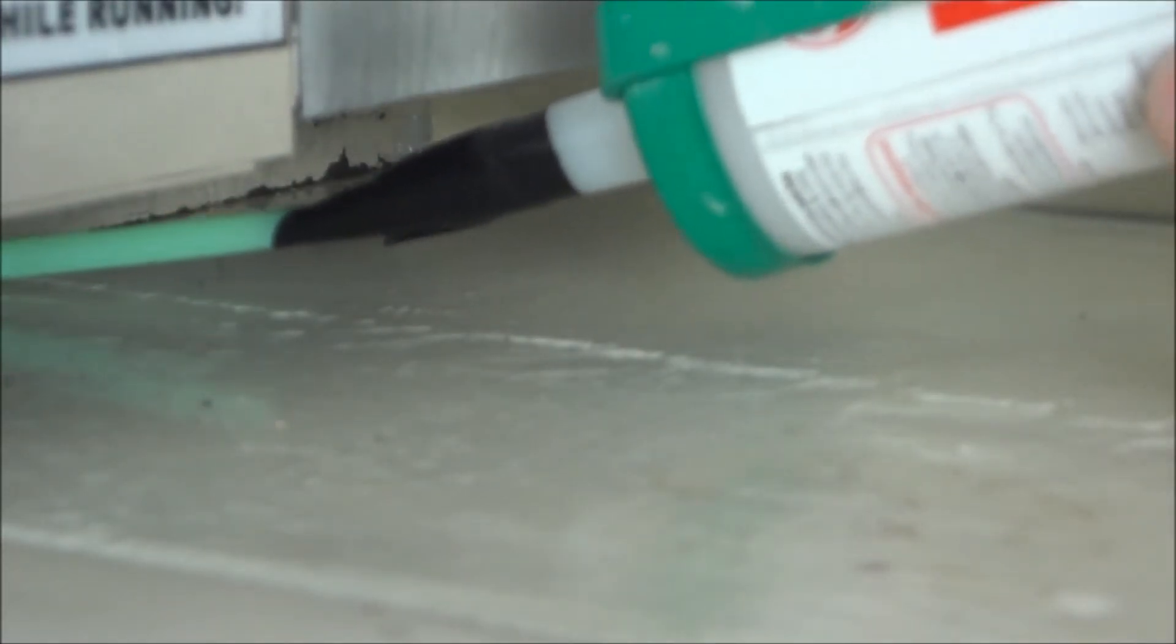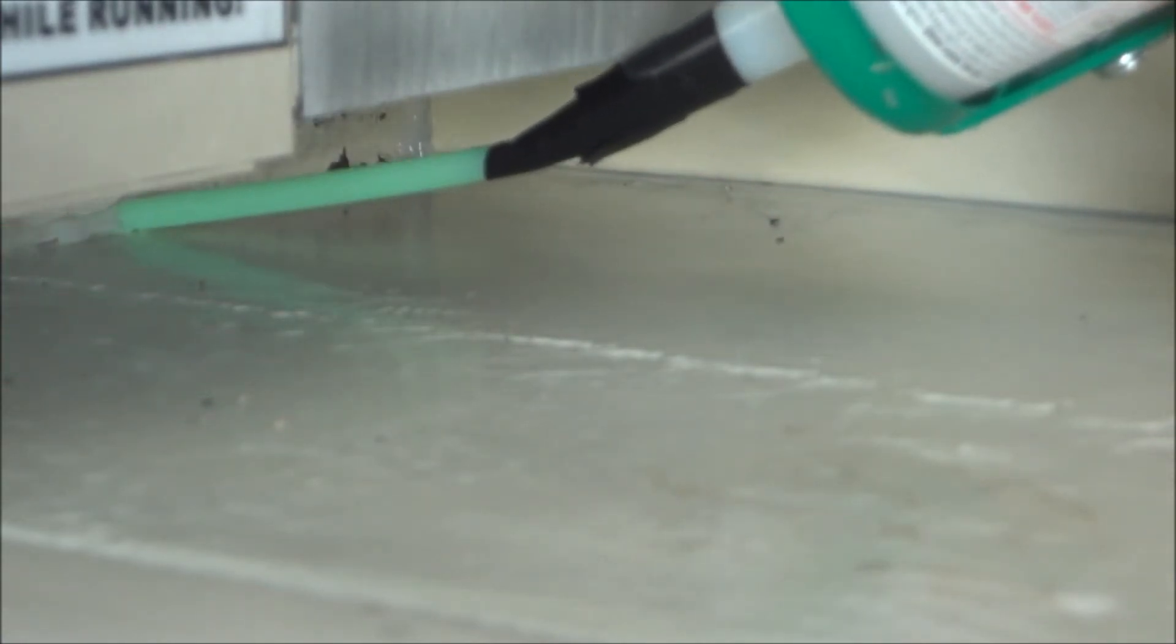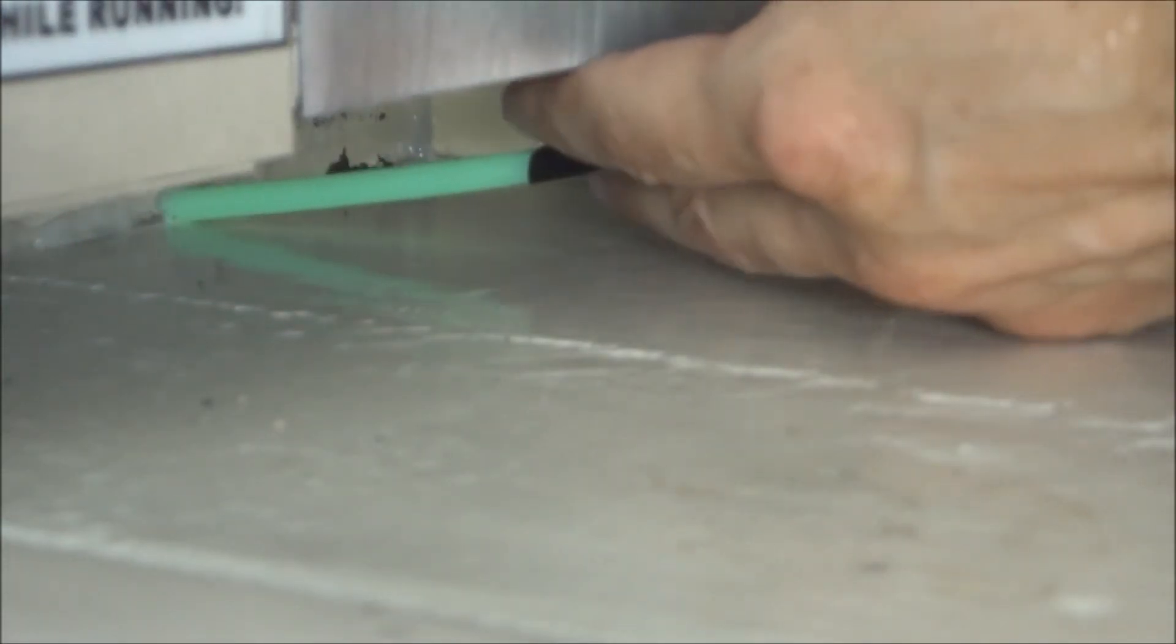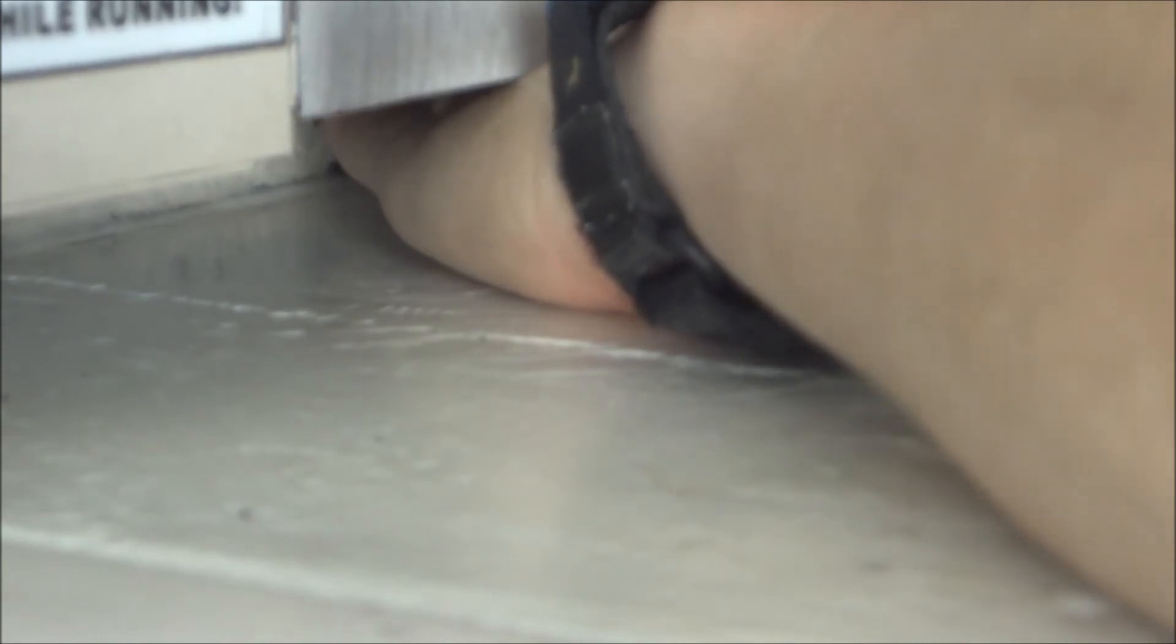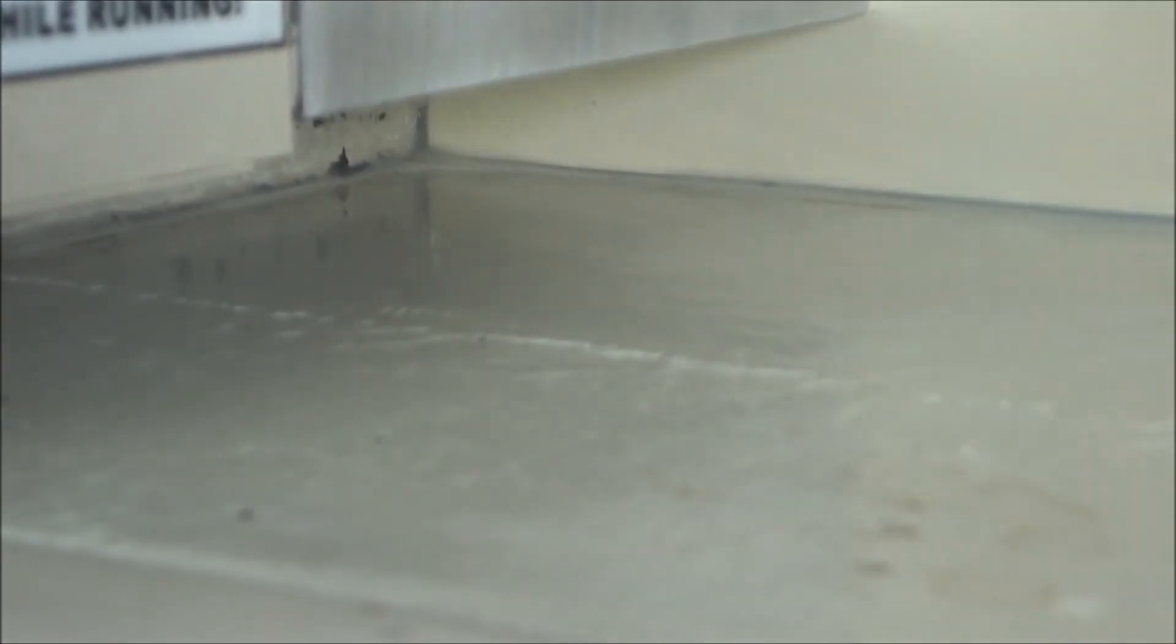Now I'm going to try to do this vertical right here. You can see you can easily get caulk in there just by putting a little extension on your caulking tube with a drinking straw. I'm going to smooth all that out.